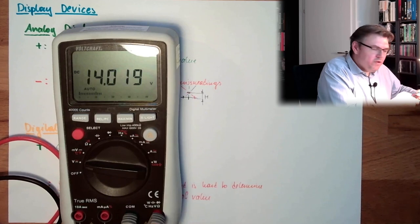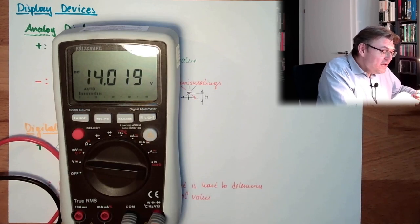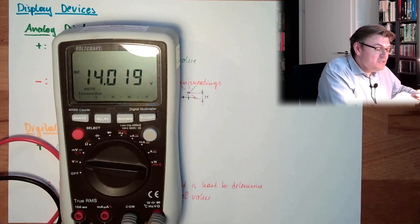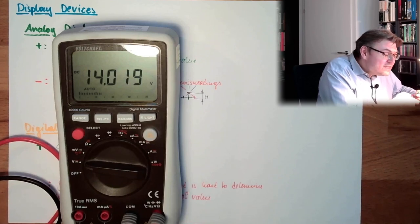And you see below, there is written auto. This is the auto scaling function. And below, you see a bar with a lot of dots. That's a quasi-analog display, which should show if it's a low value or a high value. With just these stripes or dots or whatever.